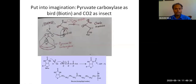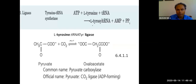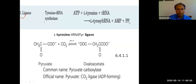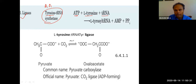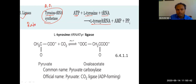An important example of a ligase is aminoacyl-tRNA synthetase. There are 20 aminoacyl-tRNA synthetases, one for each amino acid. This enzyme joins an amino acid to its tRNA using ATP. This is the rate-limiting step of protein synthesis — the rate-limiting step of translation.